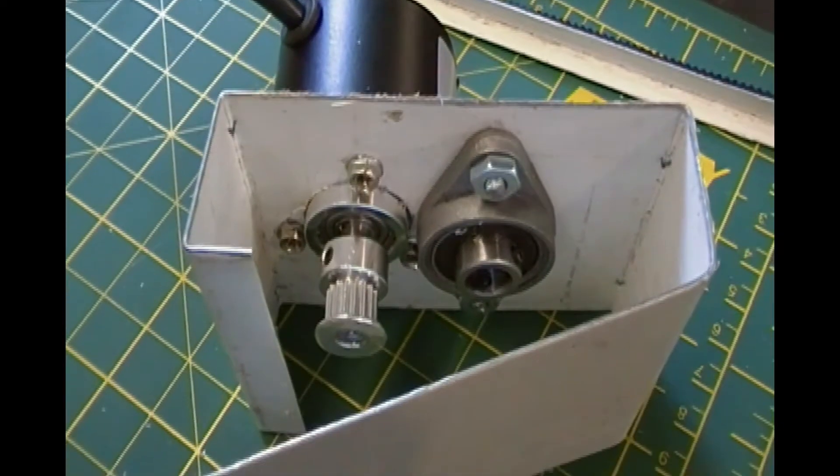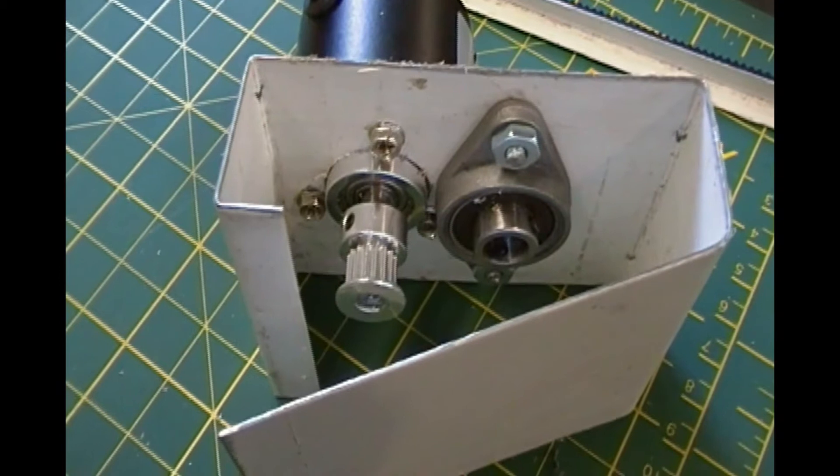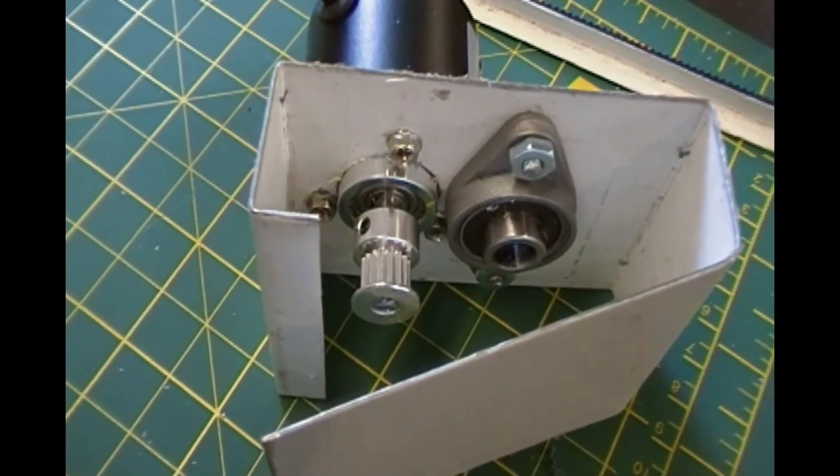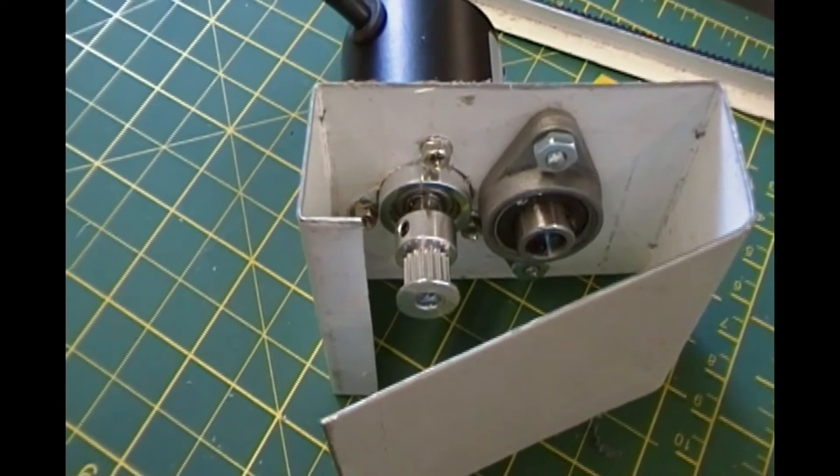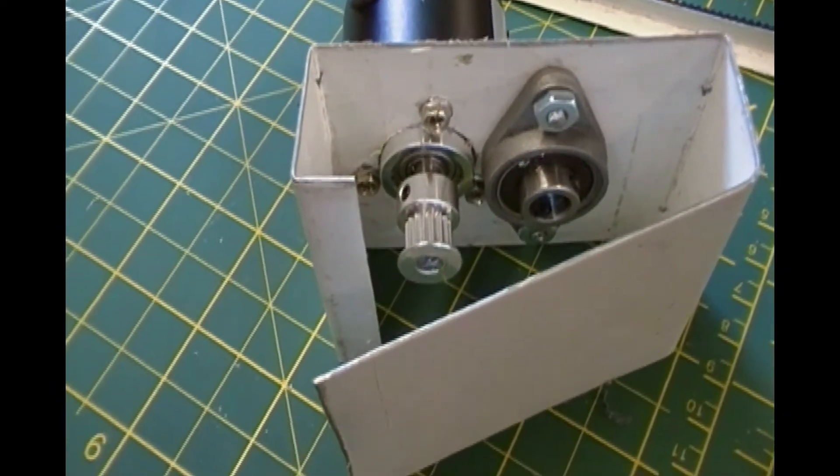I began this project by making an enclosure to hold my rotary encoder using 20 gauge sheet metal, but I was not satisfied afterwards because it turned out to be too small and I was afraid that it would flex and wobble.